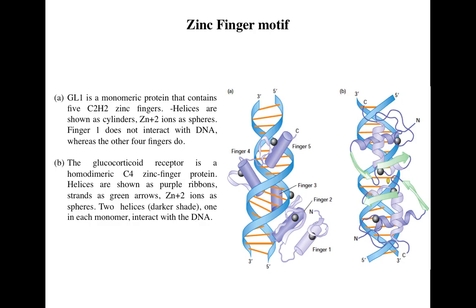Here are examples of two different proteins: GL1 and the glucocorticoid receptor. GL1 is a proto-oncogene, so if something goes wrong with this protein it may lead to cancer. The glucocorticoid receptor is an intracellular receptor — steroid hormones can cross the cell membrane, enter the cytoplasm, bind to these receptors, and the entire complex then translocates to the nucleus and binds to the DNA.